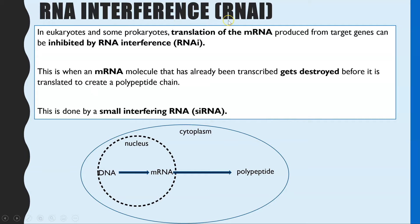RNA interference, or RNAi, is the process of regulating translation. This happens in eukaryotic organisms but also some prokaryotic organisms, and it's involved in targeting particular mRNA sequences so that certain genes become inhibited. An mRNA molecule that's already been transcribed gets destroyed once it's in the cytoplasm before it can be used to code for a polypeptide chain — that's why it's called RNA interference.